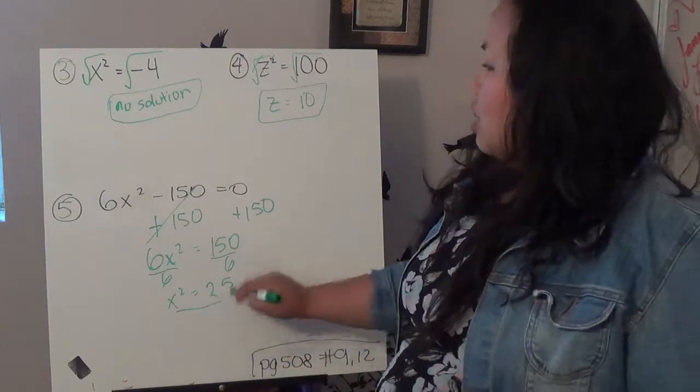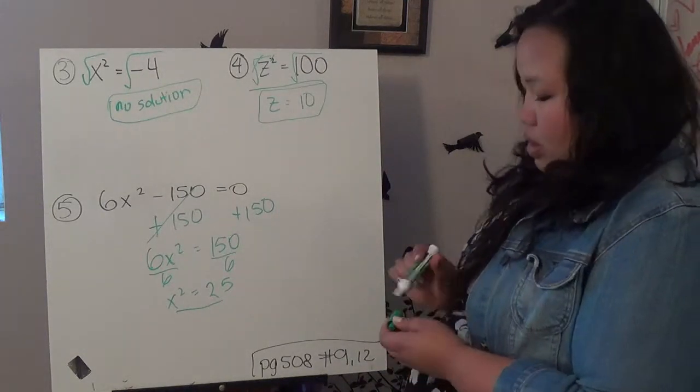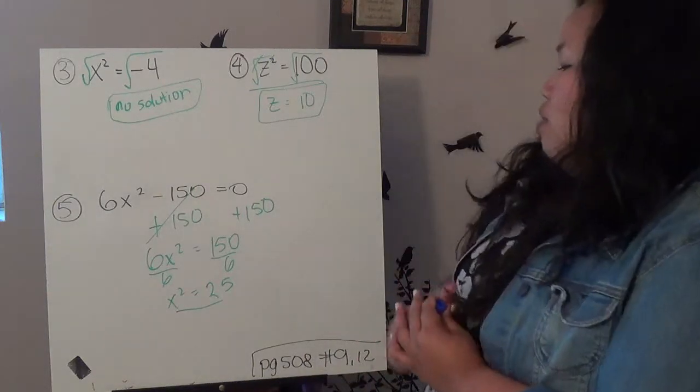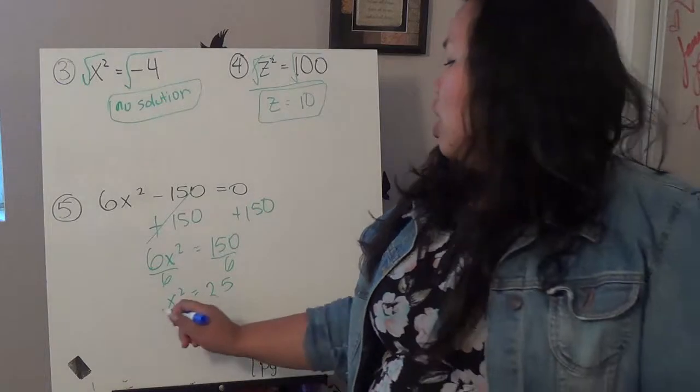x squared equals 150 divided by 6 is 25. Now, this looks exactly like what you see here. The next step, all I need to do is get rid of this square right here. And the opposite of a square is the square root.